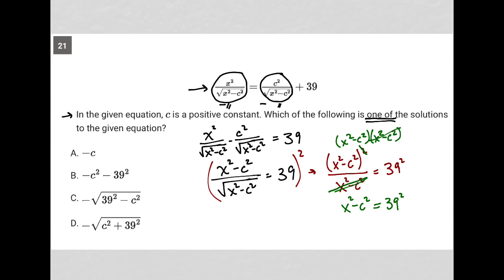Okay, well, I'm solving for x, so I should add c squared to both sides. So I'm left with x squared equals c squared plus 39 squared. And again, because I'm solving for x,